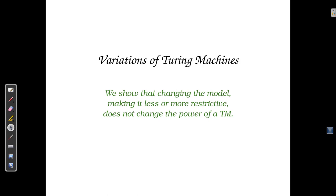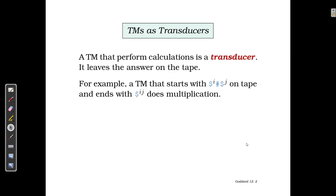The first type of Turing machine we want to talk about are transducers. What's a transducer? It's a very simple Turing machine, but it is able to perform calculations. It's going to do whatever it's doing and it will end up with an answer, and that answer will be on the tape.